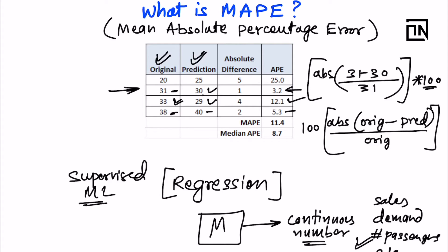When you take the mean of all the absolute percentage errors in your data, you get MAPE — mean absolute percentage error. So 11.4 here means that across all four predictions, on average I am making 11.4% error — my predictions are 11.4% far away from the original value. From this you can get the accuracy, and this is where MAPE is used to measure the accuracy of regression models: 100 minus MAPE gives you the accuracy.